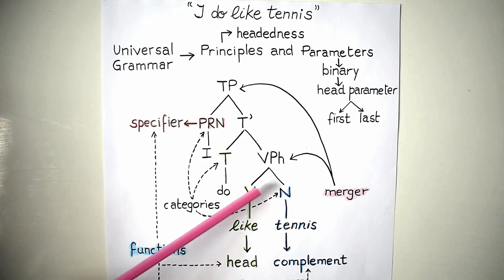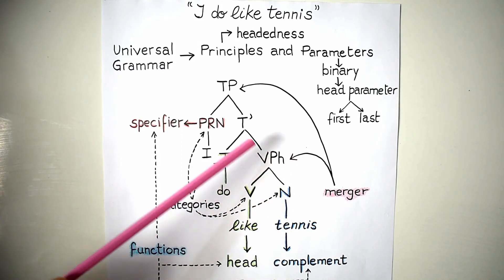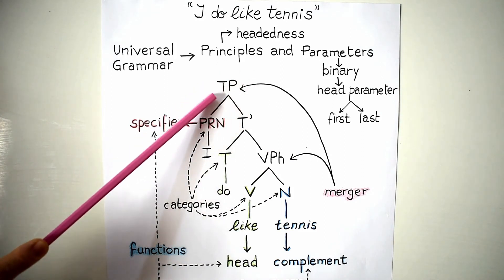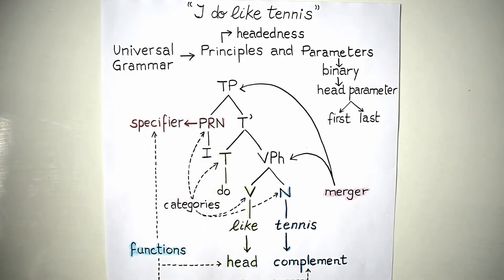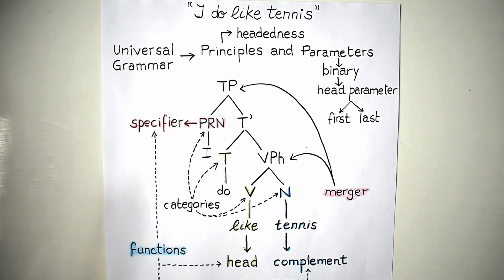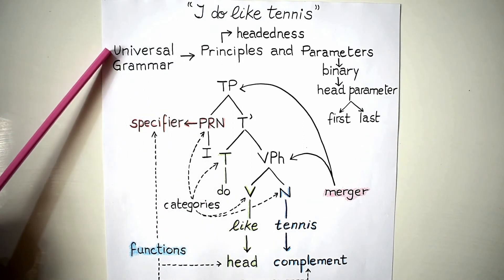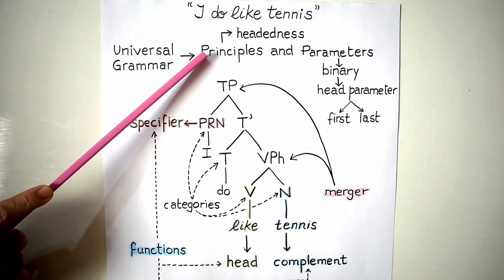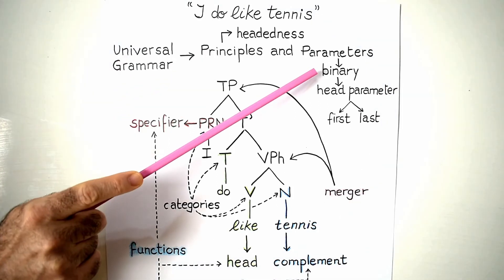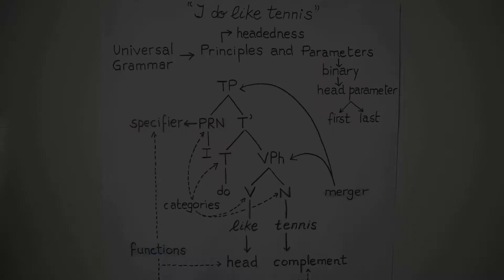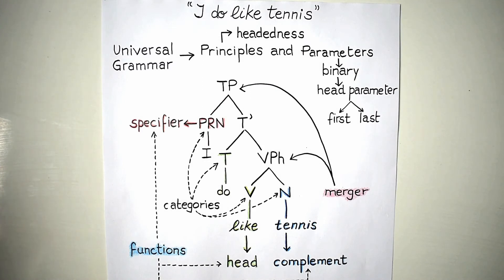All phrases have a head. So when we put two things together we're going to have a verb phrase, or a tense phrase as we will soon see, or a complementizer phrase, or a determiner phrase — we're going to have different types of phrases. All languages have phrases, and all phrases have heads, and this is universal — hence Universal Grammar. So it's a principle that pertains to all languages, and then we have binary variations.